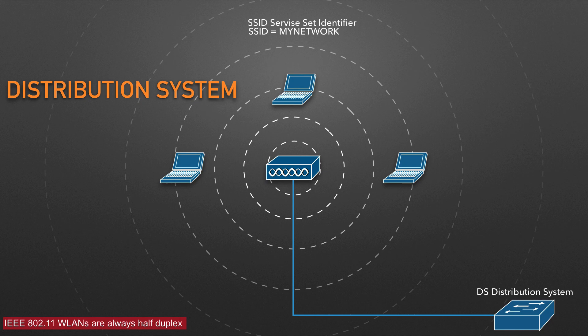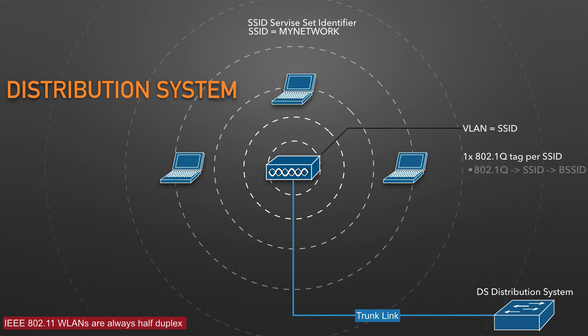You can think of an AP as a translational bridge, where frames from two similar media — wireless and wired — are translated and then bridged at layer 2. In simple terms, the AP is in charge of mapping a virtual local area network (VLAN) to an SSID. VLANs are trunked to the AP over the DS, and the AP uses the 802.1Q tag to map the VLAN numbers to the appropriate SSIDs.